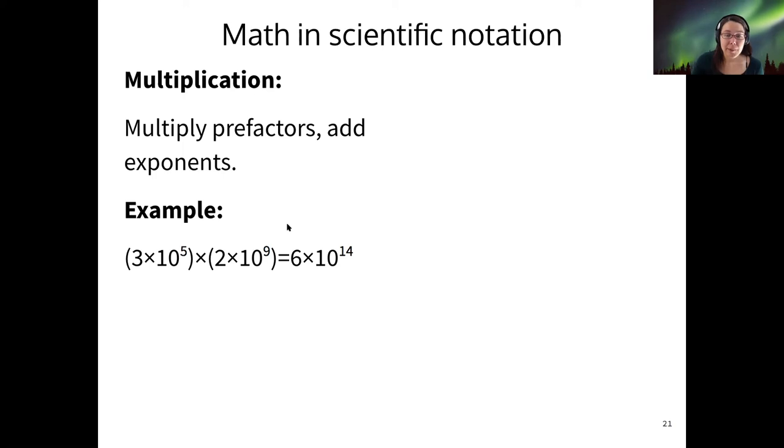And how did I make that magic work? Well, I multiplied those pre-factors 3 and 2 to get 6, and then I added the exponents 5 and 9 to get 14. So 6 times 10 to the 14. So multiplication is pretty simple.